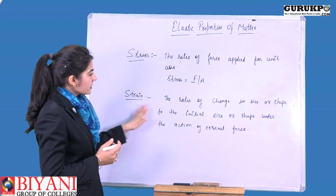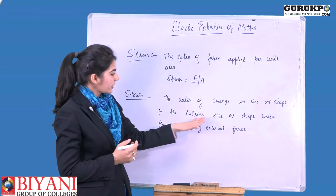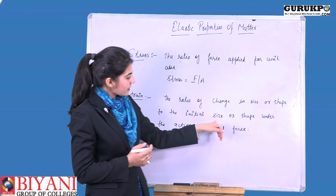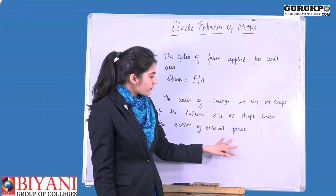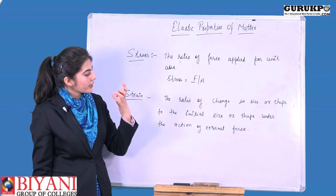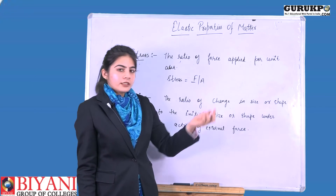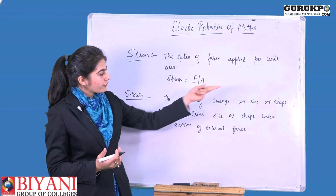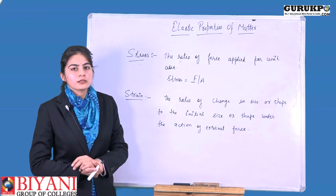Strain is the ratio of change in size and shape to the initial size. When we apply external force on any material, that material's shape and size get changed. So the ratio of change in size to the initial size is called strain.